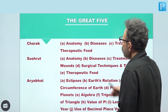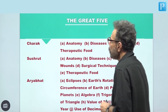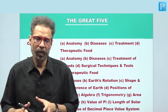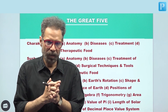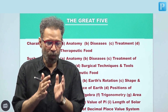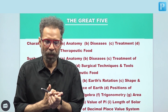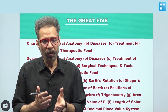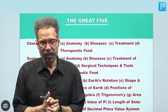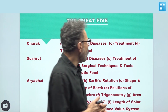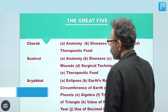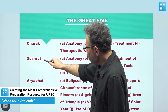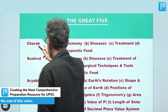The Great Five represent the five greatest among all the personalities who played a role in the development of rational pure sciences in ancient India. These Great Five are: one, Charak; two, Sushrut — both are related to Ayurveda.